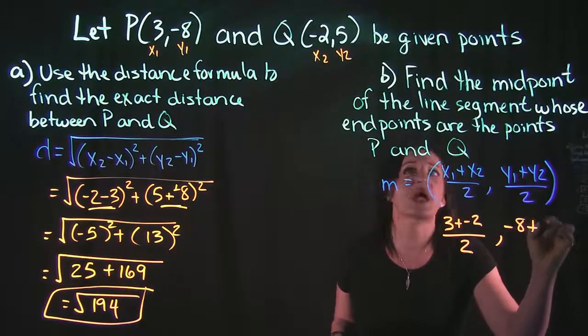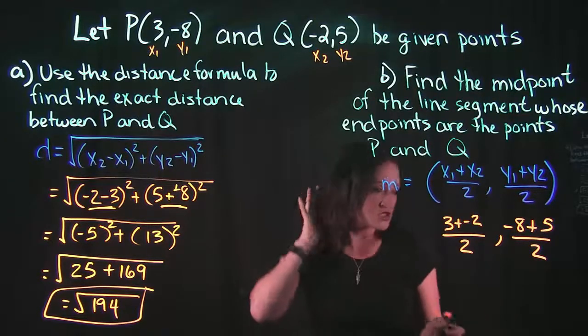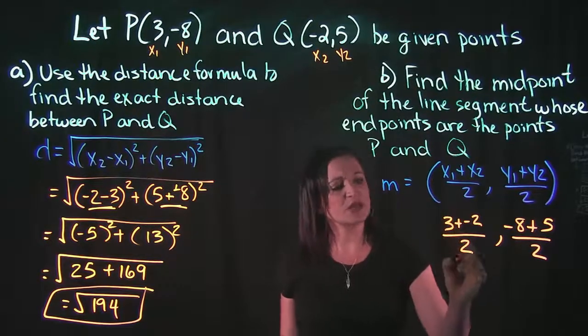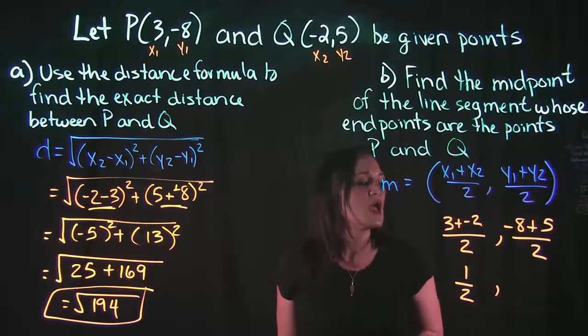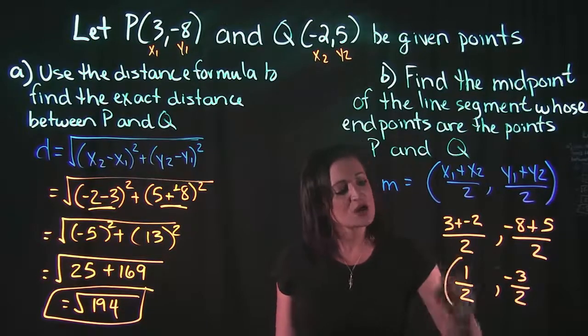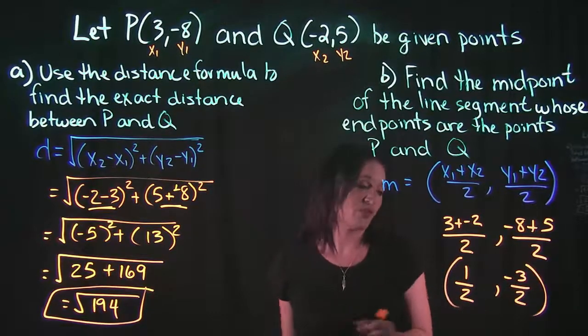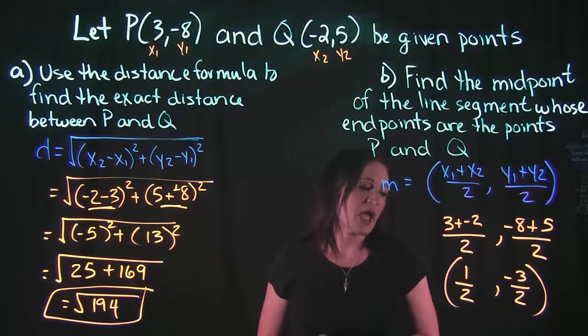So in our numerators here, 3 plus -2 is 1, and that goes over 2. -8 plus 5 is -3, and that goes over 2. So this is actually your midpoint here. Your midpoint is (1/2, -3/2). So 1/2 is your x value, -3/2 is your y value for the point that would be directly in the center of that midpoint.